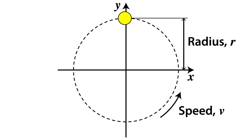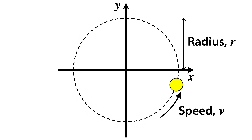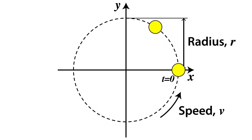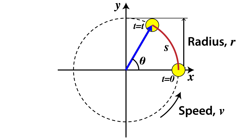Let's look at the system in a bit more detail on the computer. We have an object undergoing uniform circular motion, moving in a circular path with radius r, and moving with a constant speed v. We're going to start timing when it crosses the x-axis and stop at a time t later. When we do that, we can see that it's moved through an arc of length s. And when we draw a line from the origin out to the final position of the object, we can see that we have an angle theta at the center.